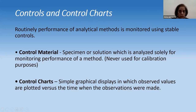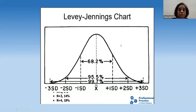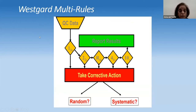You have control charts — simple graphical displays where observed values are plotted versus the time when observations were made. This ultimately leads to a Levy-Jennings chart. These are the limits of 1SD and 2SD. The control should always fall within 2SD — never beyond. If it reaches 2SD, that is a warning. QC data is analyzed as per these rules, and if violated, corrective action must be taken.